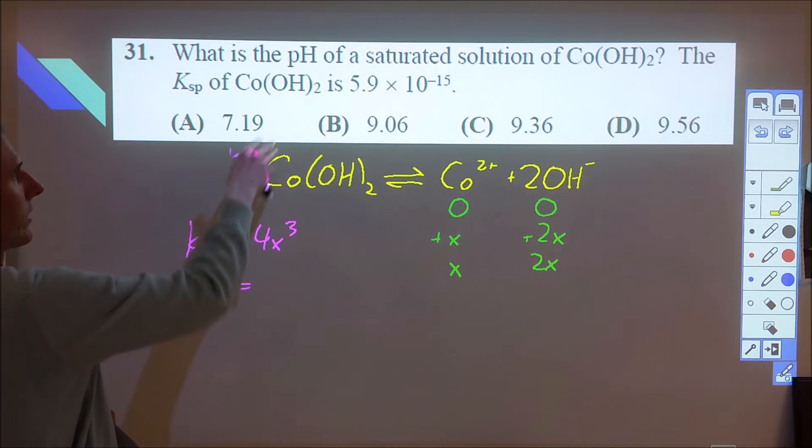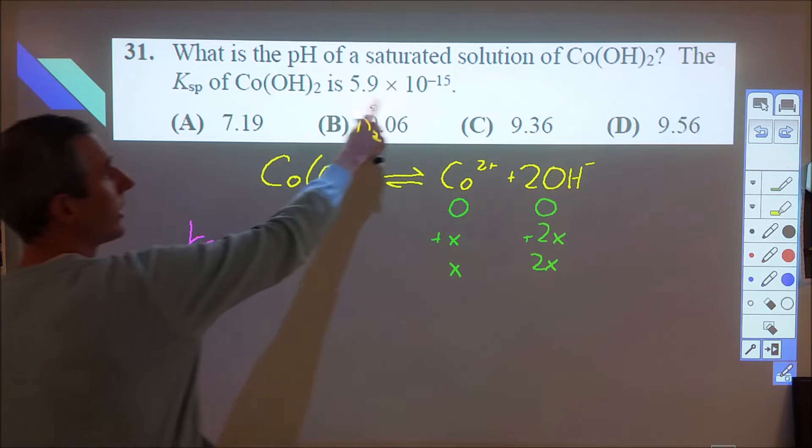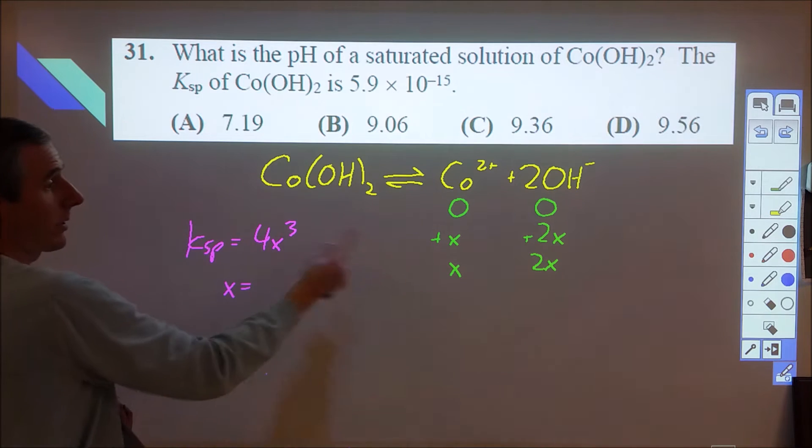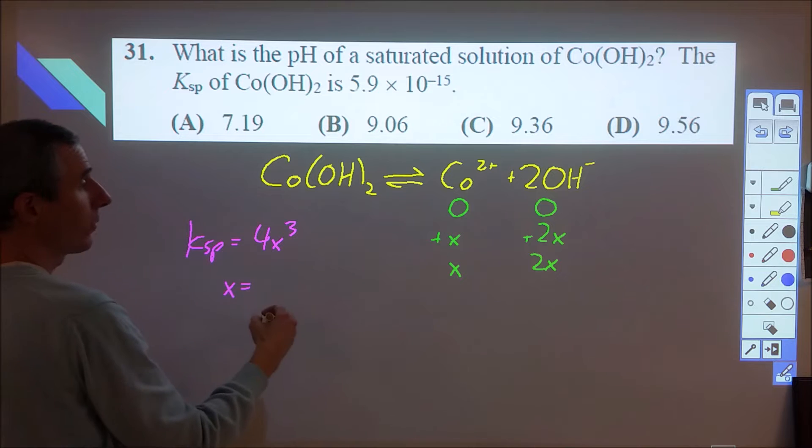We've got cobalt hydroxide dissolving a little bit. We have a KSP analysis that gives us the KSP value up here, 5.9 times 10 to the negative 15. Because it goes to one ion and two ions, we end up with x times quantity 2x squared, or 4x cubed.